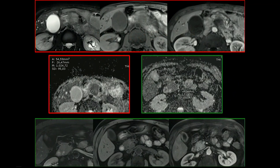Look for the stenosis. Regarding DWI: the ADC map is lower in acute autoimmune pancreatitis than in pancreatic carcinoma, which is lower than in mass-forming pancreatitis. Some values cited range from 0.9 to 1.1 to differentiate tumor from mass-forming pancreatitis. However, there are overlaps — one case had a tumor and another had mass-forming pancreatitis both with ADC of 1.1, making correct diagnosis difficult.